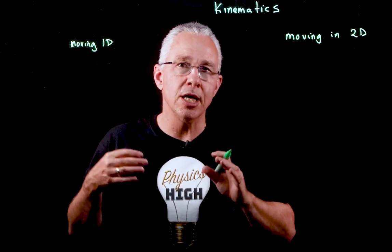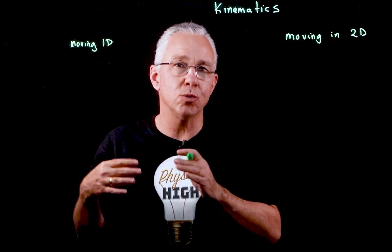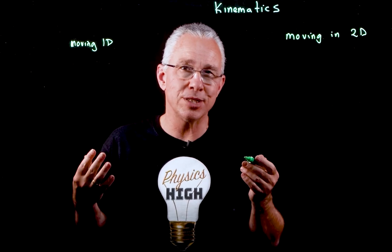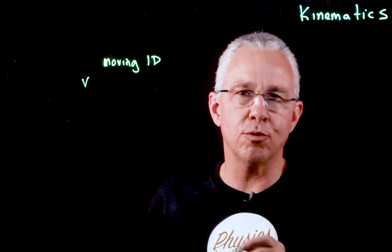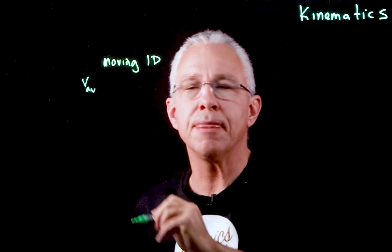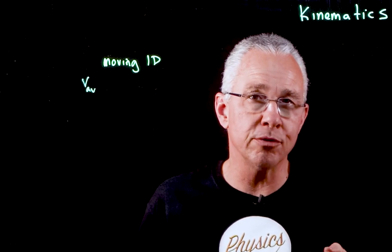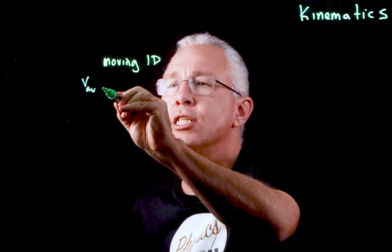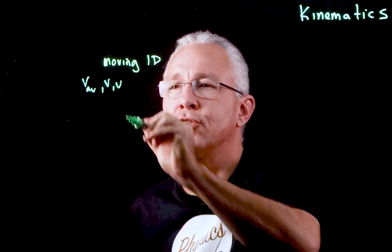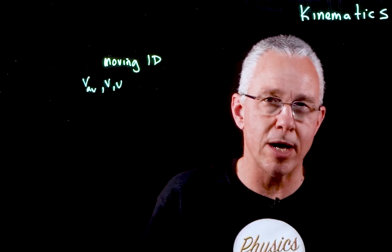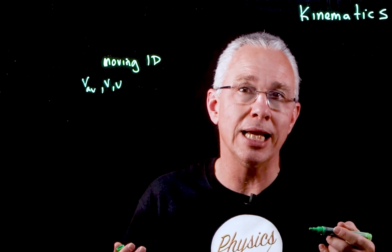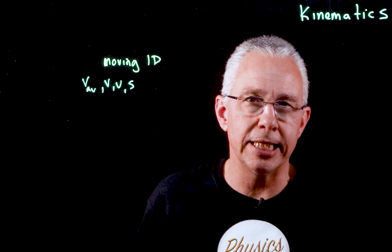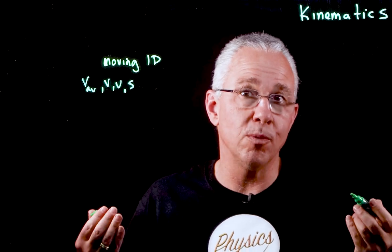When we're looking at motion in one dimension, we examine five key variables used to describe motion. The first is velocity — which could be an average velocity, or it could mean an initial velocity and a final velocity if the object is changing its velocity. We also look at displacement, which we denote with the letter s.